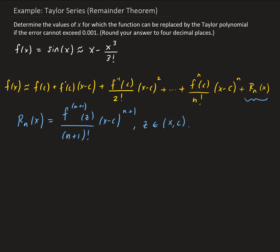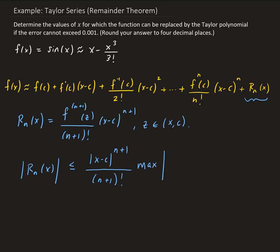It can be shown that if we take the absolute value of this residual, it is bounded. We don't need to put absolute value signs on the factorial term since those values are already positive. The residual is going to be less than or equal to the maximum of the absolute value of the (n+1)th derivative.